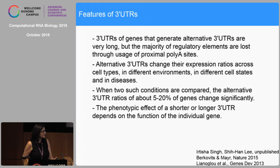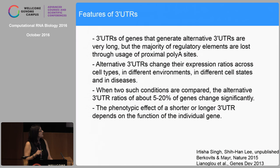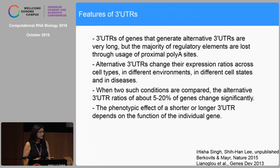The key facts to remember about 3' UTRs: genes that make alternative UTRs can have very long 3' UTRs that become very short when a proximal poly-A site is used. 3' UTRs can change their expression ratios in nearly every condition, but it's usually only 5 to 20 percent of genes with alternative UTRs that change significantly when comparing two conditions. The phenotypic effect of shorter and longer 3' UTRs really depends on the specific gene affected.